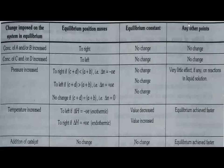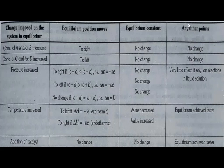Hello students, welcome to the class. In the previous class we discussed Le Chatelier's principle — the effect of concentration, pressure, temperature, and addition of a catalyst. I've made a chart to help you understand. If the concentration of reactants A or B is increased, equilibrium shifts to the right and equilibrium constant remains unchanged. If the concentration of products C or D is increased, equilibrium shifts to the left.